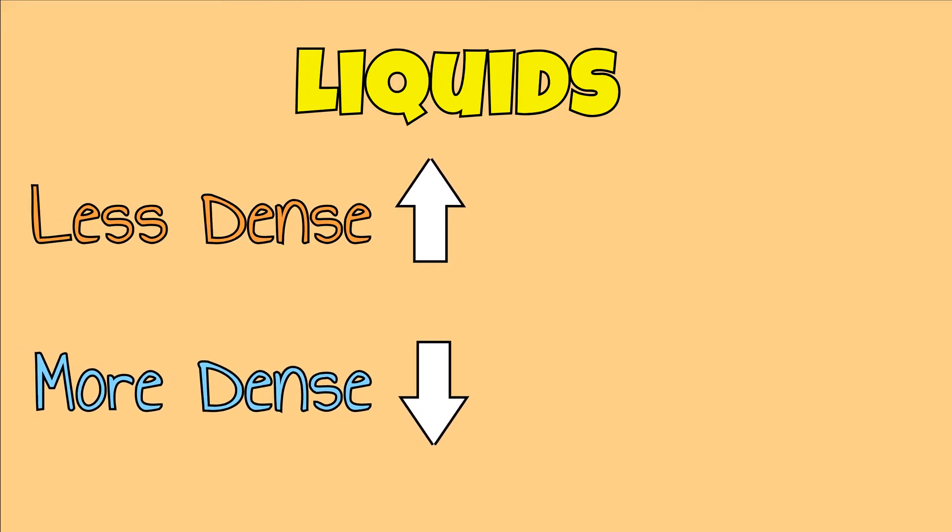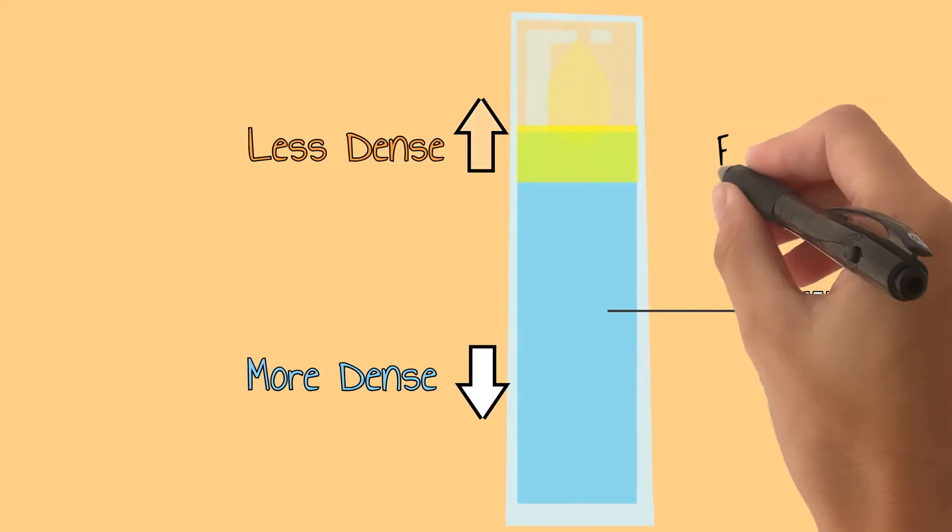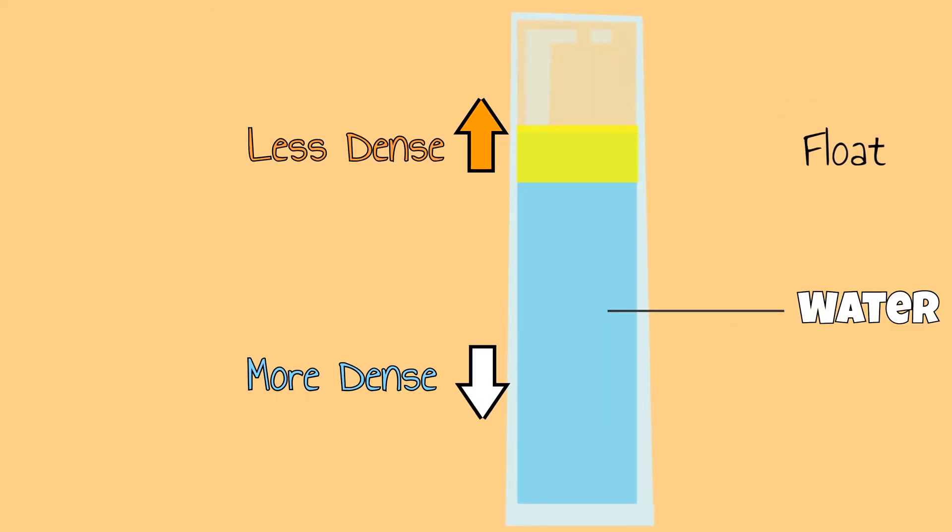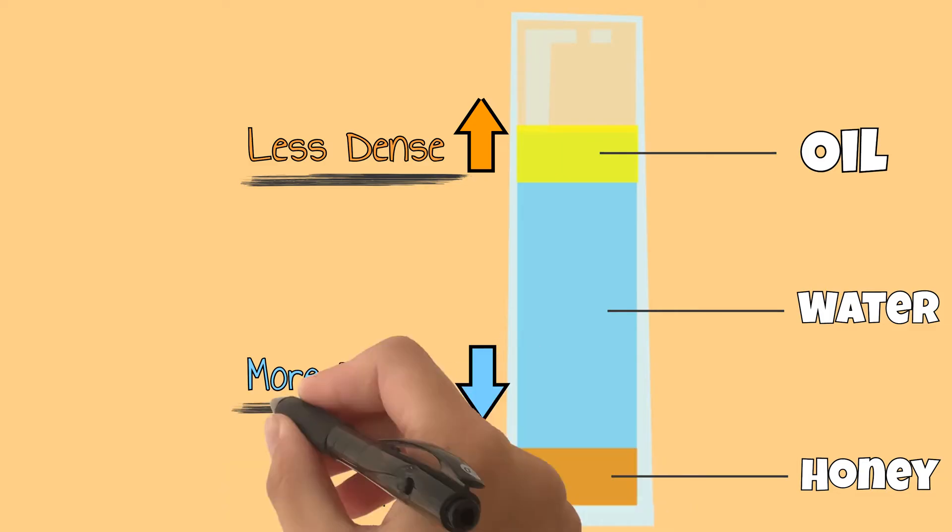Liquids can also be more dense or less dense than water. For example, if oil is placed in water, it will float. This means that oil is less dense than water. Honey is the opposite and will sink to the bottom when placed in water. Since it sinks, it is more dense.